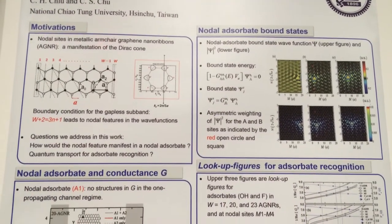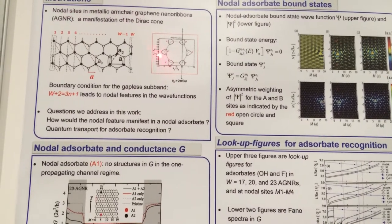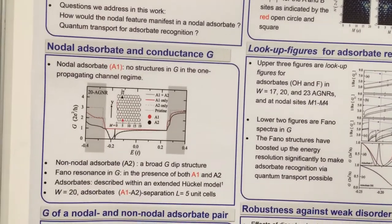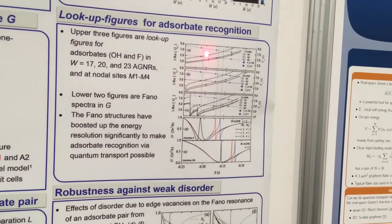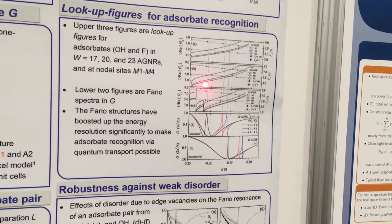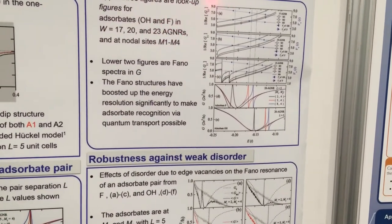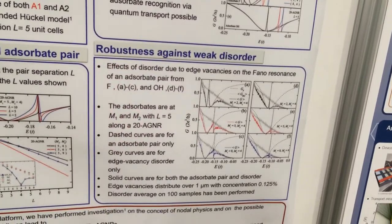In a simple way, the ribbon has nodal sites, and this nodal site is related to Dirac physics. We show that an absorber at this special nodal site forms bound states, and this bound state can be revealed in Fano resonances, which greatly enhance the resolution in energy. We propose that it can be used for absorber recognition — that is, absorber recognition in terms of quantum transport.